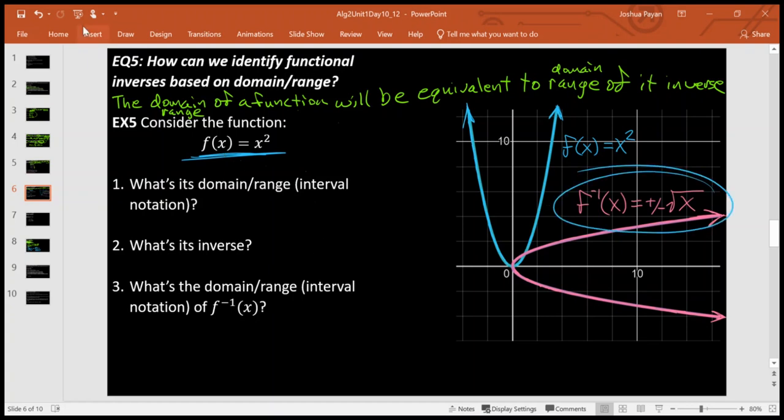Let's talk about domain and range as it pertains to determining functional inverses. We know that this guy is inverse of this guy here, so let's prove that the domain of a function will be equivalent to the range of its inverse and vice versa.